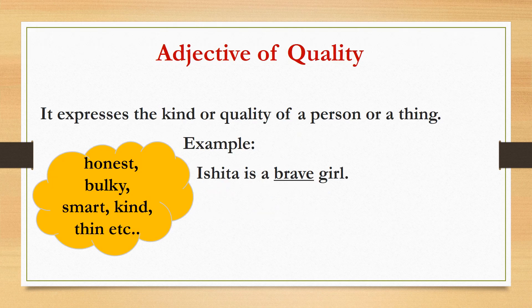The first type of adjective that we have is adjective of quality. Now, what do we mean by quality? Quality means the characteristic or feature of something. Adjective of quality indicates the shape, size, color, quality of a person or a thing. For example, if you are describing your teacher like she is a very good teacher, the word good will be the adjective of quality.